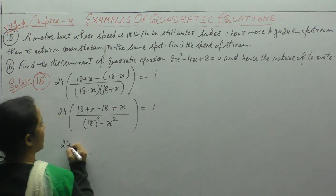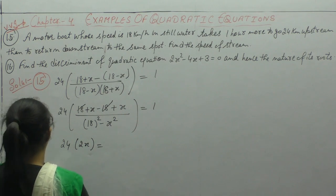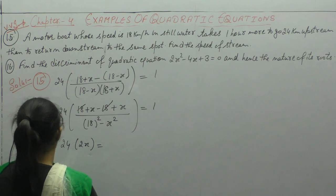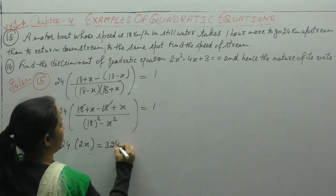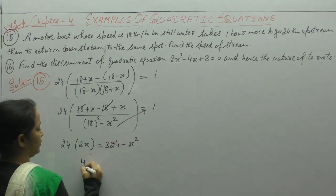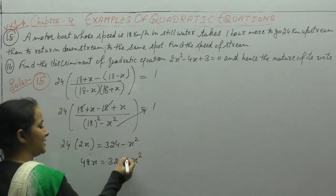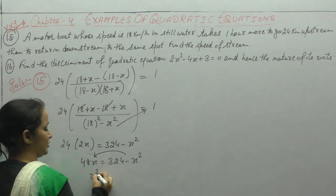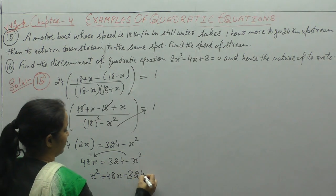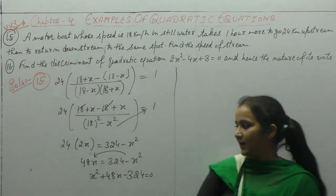So we have 24 into 2x over (324 minus x squared) equals 1. Cross multiplying: 24 into 2 gives 48x equals 324 minus x squared. Bringing all terms to the left hand side with sign change: x squared plus 48x minus 324 equals 0. This is our quadratic equation.